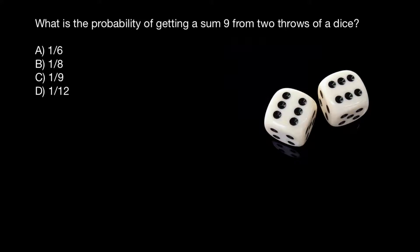Hello, and welcome to Nikolai's genetics lessons. Today I have prepared another probability problem for you, because modern biology is mostly computational biology. So here's a problem: what is the probability of getting a sum of nine from two throws of a dice? As you see, a dice has six surfaces.